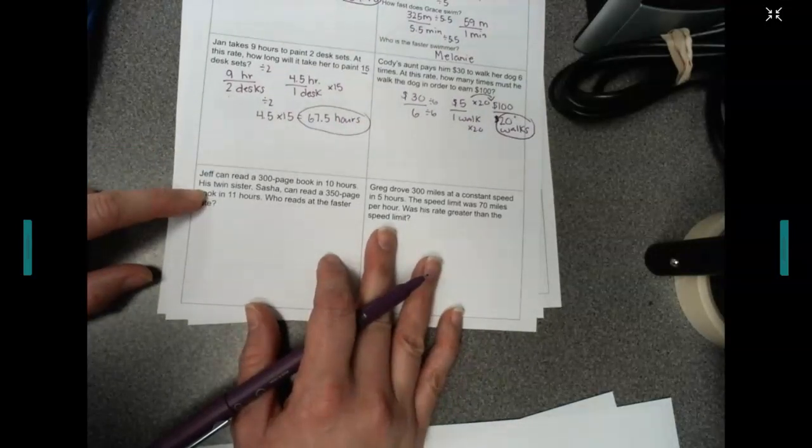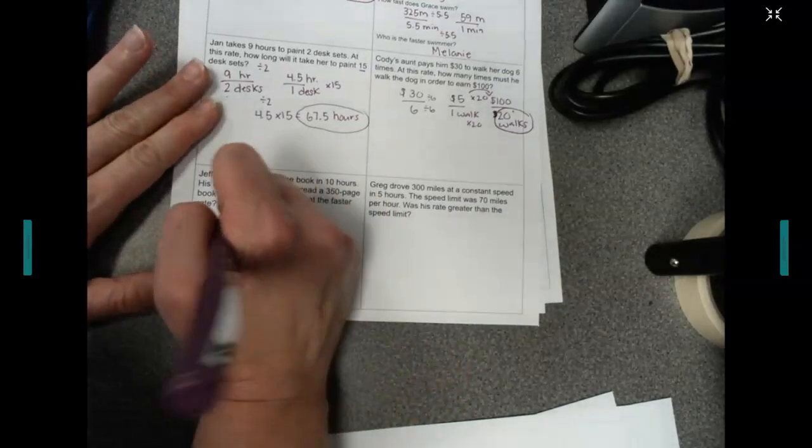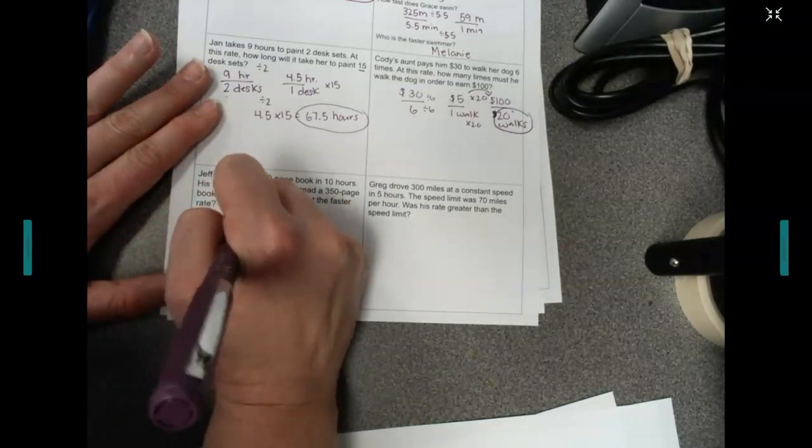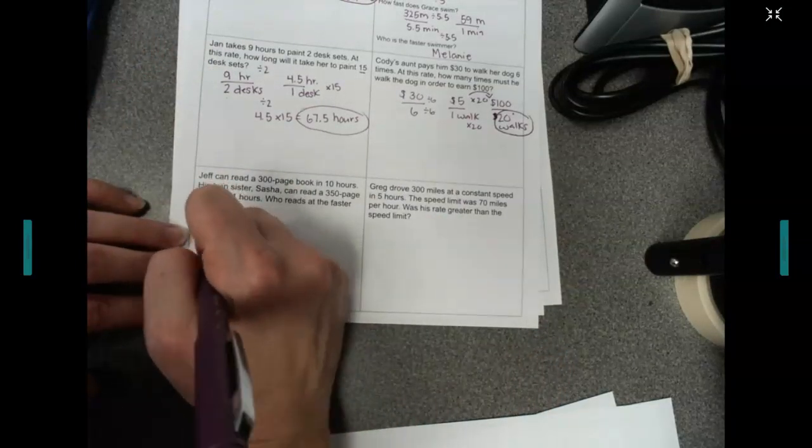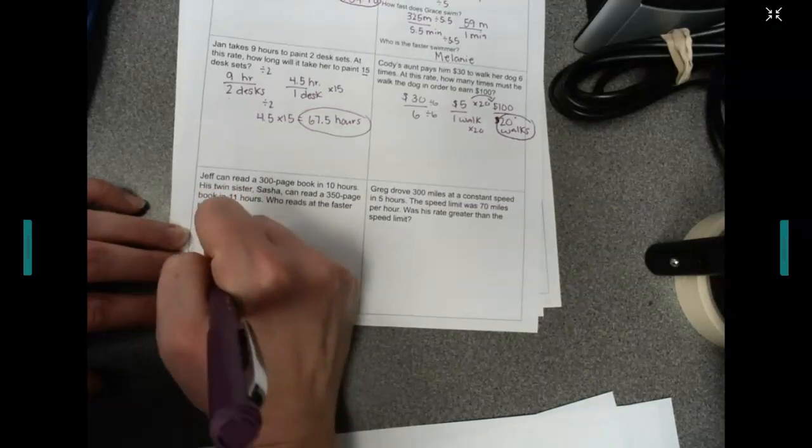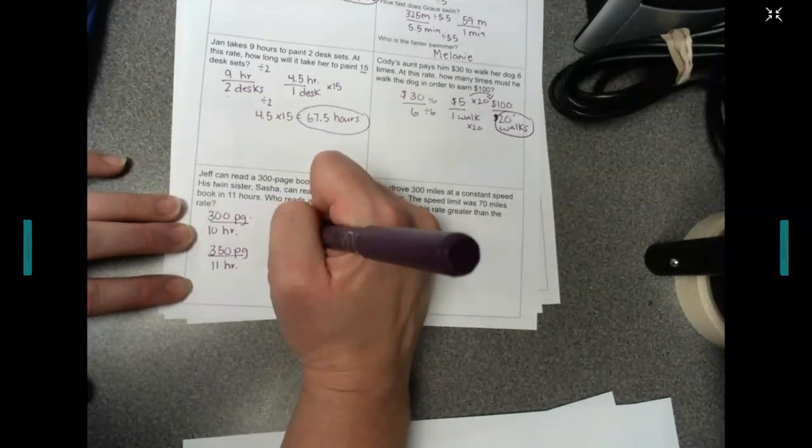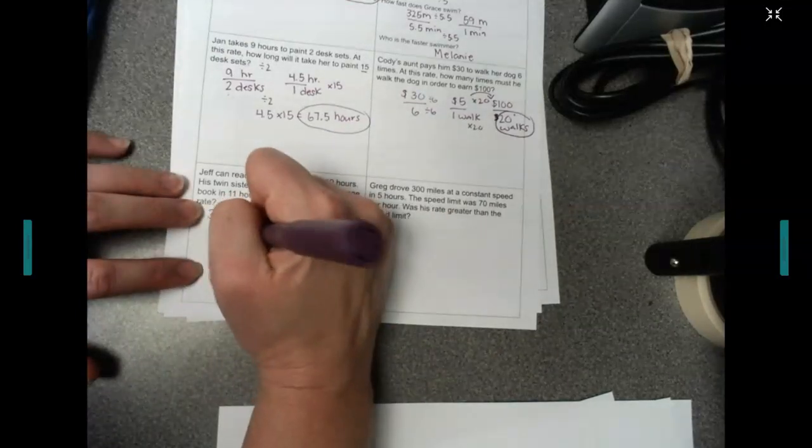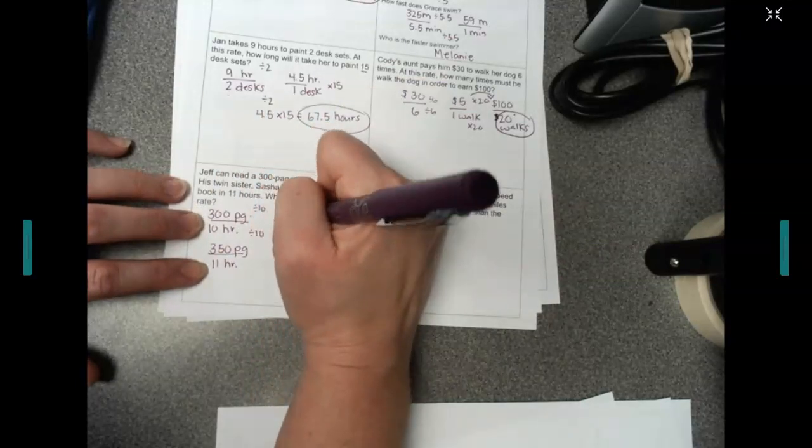Jeff can read a 300-page book in 10 hours. So, 300 pages, 10 hours. His twin sister, Sasha, can do 350 pages in 11 hours. Who reads at a faster rate? So, we're going to take both of these down to 1 hour here. This one has a 10 on the bottom, so we're going to divide by 10. 300 divided by 10 is 30 pages per hour.